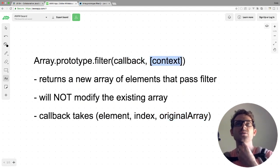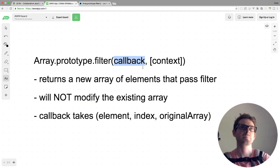The second argument is the context, which we're not really going to get into, but if you want to overwrite what the this context is during your callback, you can do that. So with that being said, let's go ahead and look at some examples of how the filter will work.